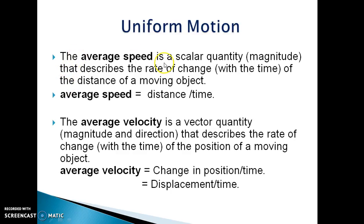The average speed is a scalar quantity that describes the rate of change of the distance of a moving object. Average speed is given by distance upon time.